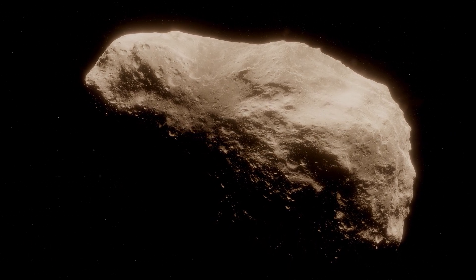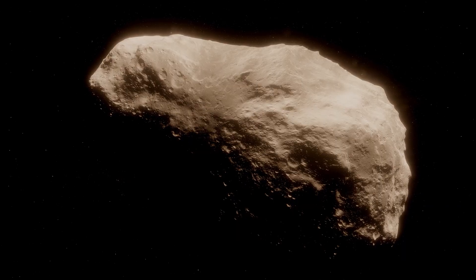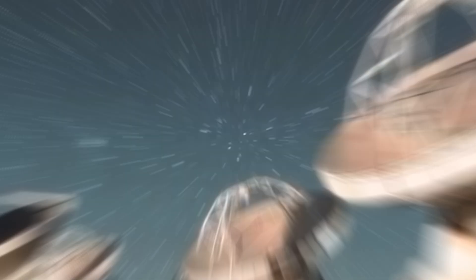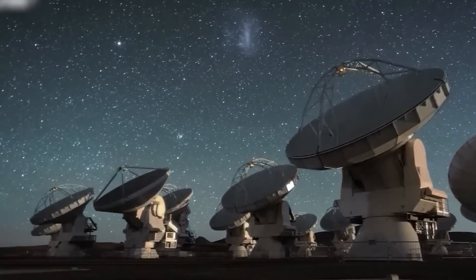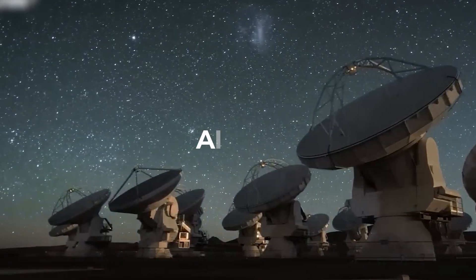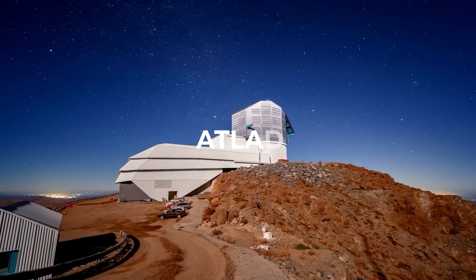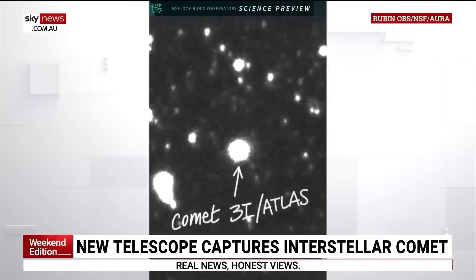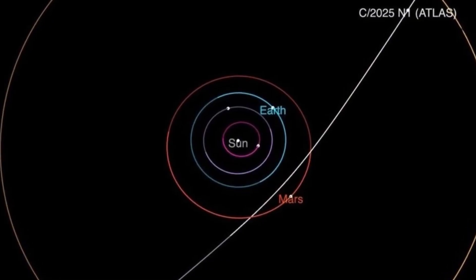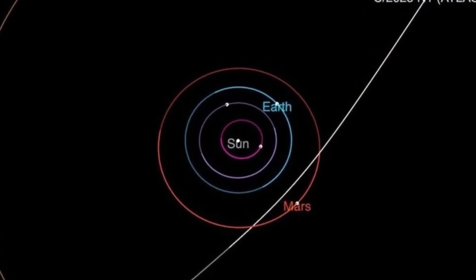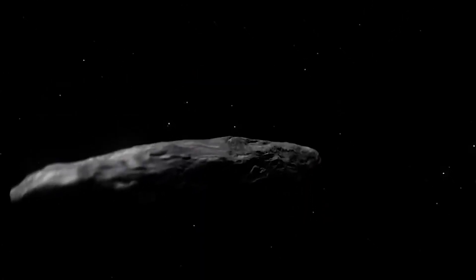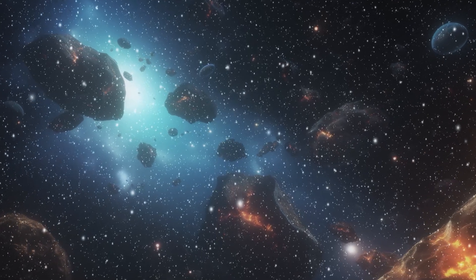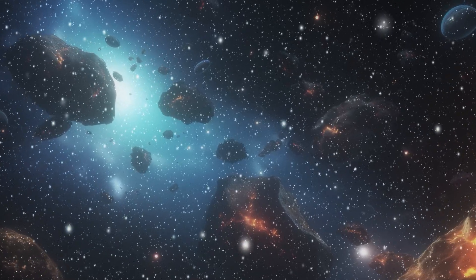Let's start with the cold, hard facts, because they're weird enough on their own. The Asteroid Terrestrial Impact Last Alert System, Atlas, spotted this thing from an observatory in Chile. Its orbital eccentricity is above 1, meaning it's not from around here. It's just passing through, a tourist on a galactic road trip. But this tourist is behaving oddly.